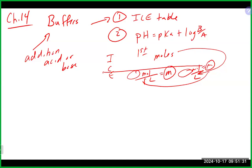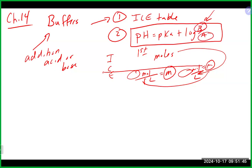Truth be told, if you know it's a buffer and this is your final destination in terms of how you're going to do the calculation, you can go moles on top and moles on the bottom in the Henderson-Hasselbalch equation and it will work out correctly because the liters on top and bottom will cancel out. But if you're going to go into the ICE table approach, you should be in molarity. To avoid making mistakes, just convert everybody back to molarity after the first ICE table, and then you'll always be in the correct units no matter what calculation you do next.